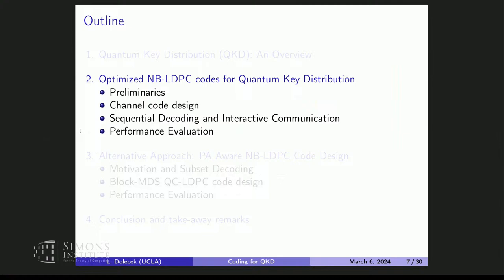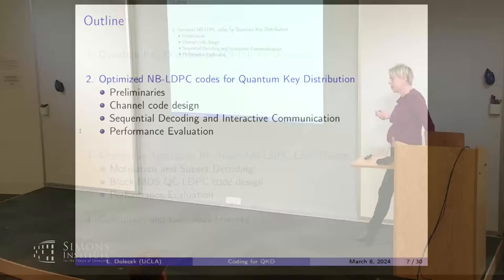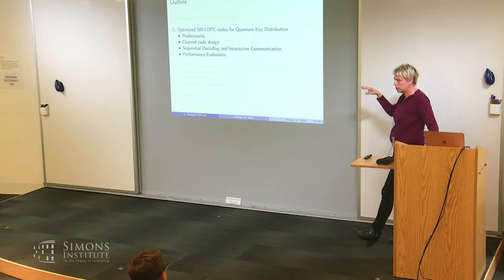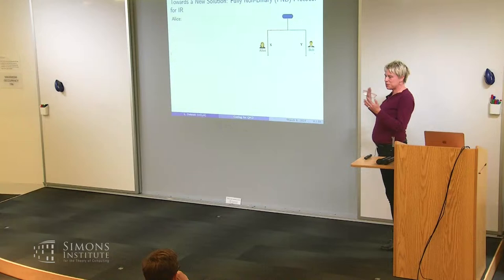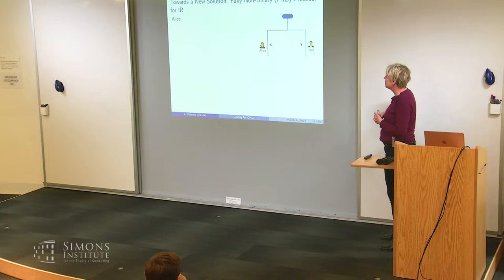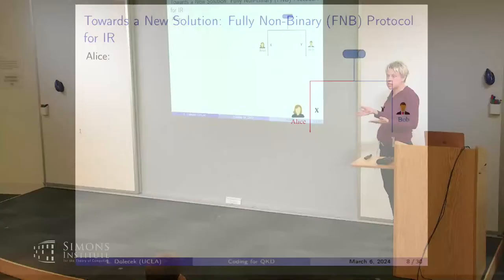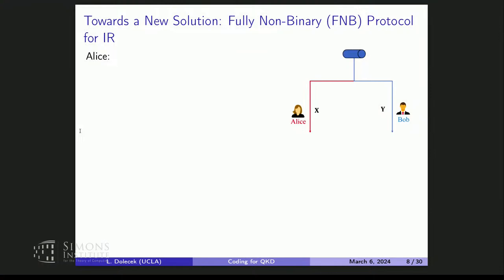To reconcile the two strings, ideally there should be no remaining errors between them. We send syndromes X times H to Bob, where H is an appropriate parity check matrix—it can be over a non-binary field of size 2 to the Q. Bob figures out what X is based on the syndrome, his own information Y, and the known statistical properties of the channel, and eventually they should be the same. The information reconciliation rate depends on three things: the field size Q, one minus the frame error rate, and the rate of the code.